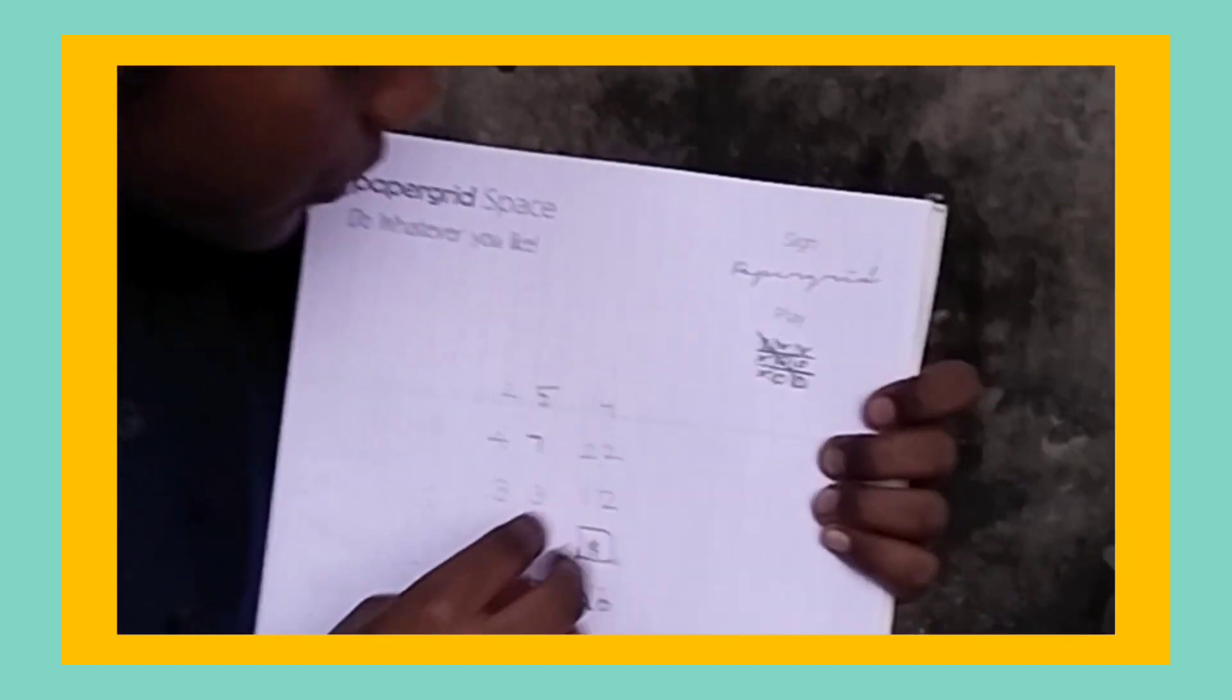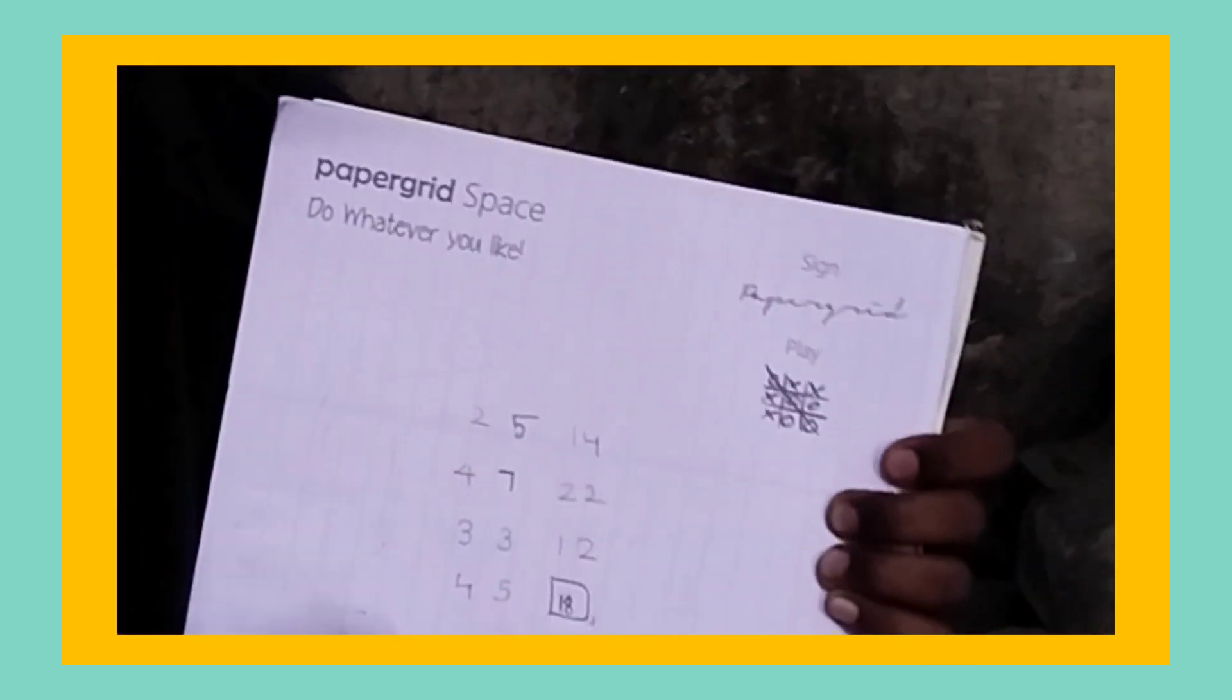11 times 2 equals 22. And 3 plus 3, 6. 2 sixes are 12. We have to multiply all into tables. 3 plus 3, 6, and 2 sixes are 12.